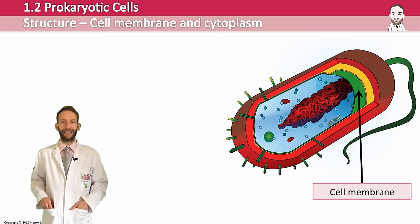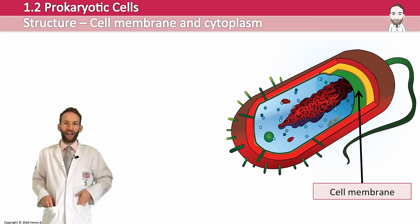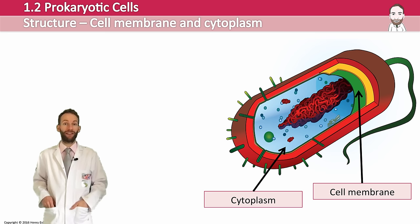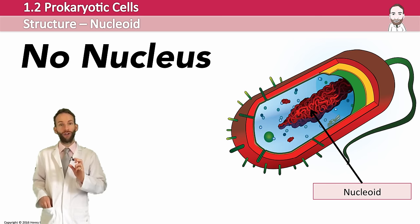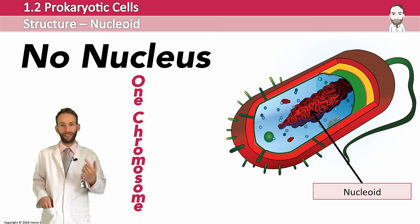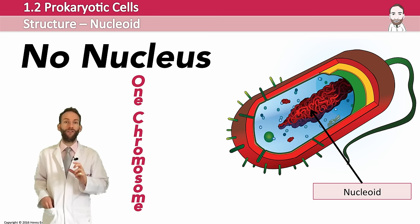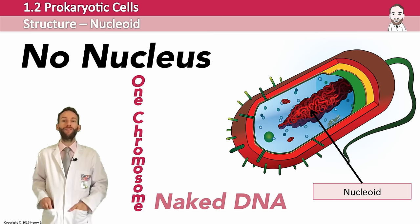The cell membrane is pretty much exactly the same as you'd find in a eukaryotic cell. The cytoplasm is also very similar to eukaryotic cells, though a major difference is that there is no cytoskeleton. Prokaryotic cells don't have a nucleus, but they do still have DNA — it's one single chromosome, not enclosed in a membrane or envelope. It's just free in the cytoplasm, this nucleoid floating around, and it's not associated with any proteins. Normal eukaryotic DNA is associated with histone proteins, but this DNA is not — it's what we call naked DNA.